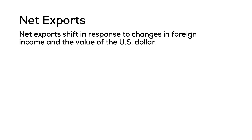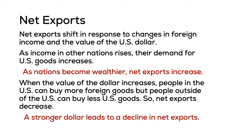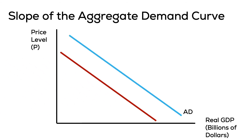Net exports shift in response to changes in foreign income and the value of the U.S. dollar. As the value of the dollar increases — that is, it appreciates — Americans will be able to buy more foreign products. However, since the dollar is more expensive relative to other currencies, international markets will reduce the amount of U.S. products they purchase. Therefore, as the dollar appreciates, exports decrease, imports increase, and net exports decrease, causing AD to shift to the left. When the dollar depreciates, Americans buy fewer imports and American products become more affordable for international markets, causing net exports to increase and AD to shift to the right.